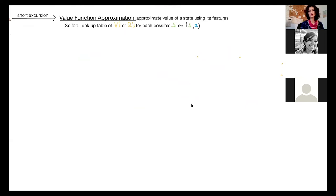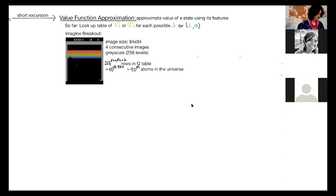So, so far we had the value estimates or Q value estimates as a lookup table for each possible state or state action pair. And now we want to approximate this. And the reason for this is,